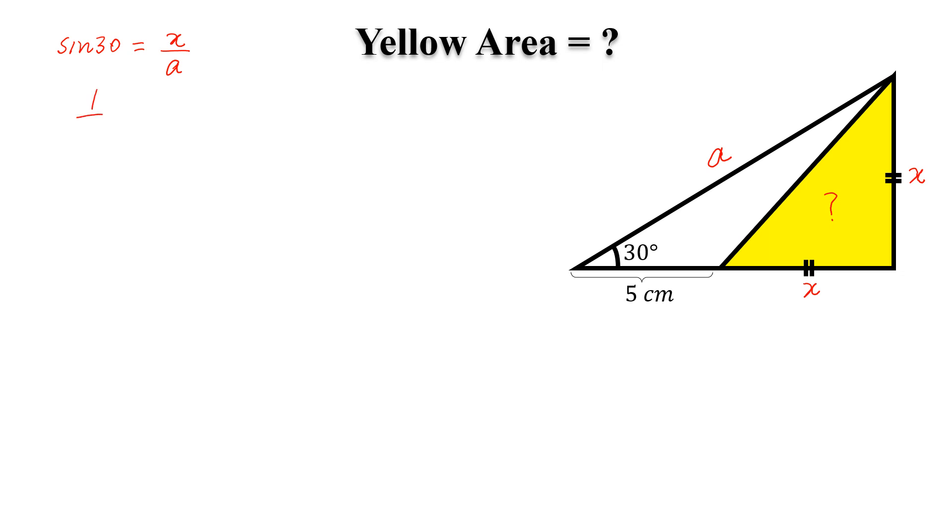Then we can write sin 30 equal to x divided by a, and sin 30 is 1 by 2, so this is equal to x by a, and a is equal to 2x. So this length is 2x.